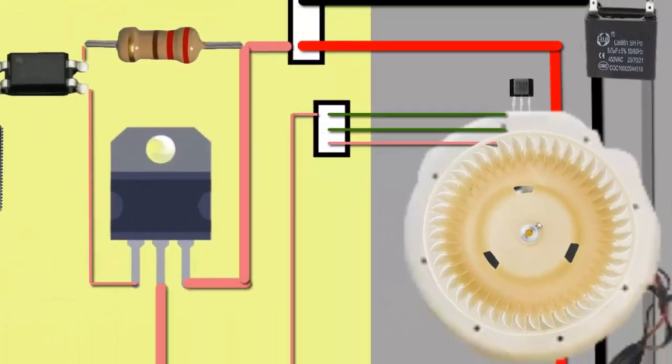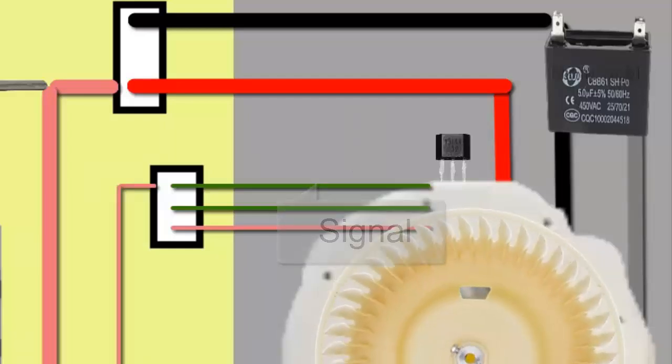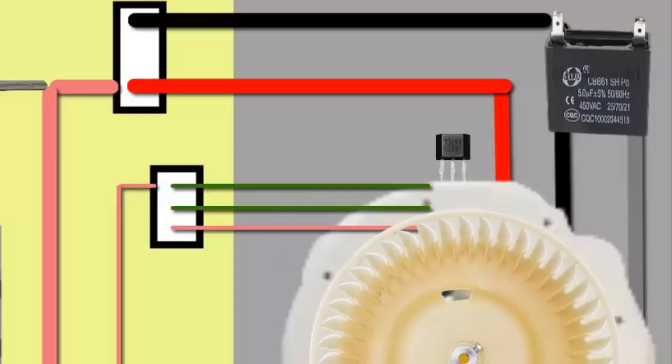The signal generated by the speed sensor is transmitted to the electronic board through a cable. This signal reaches the main controller of the board, providing information about the fan's speed.